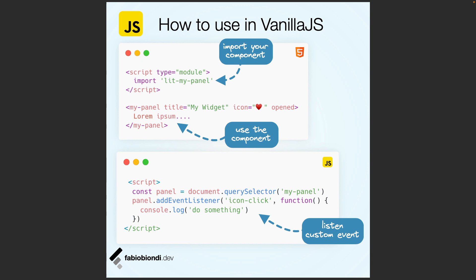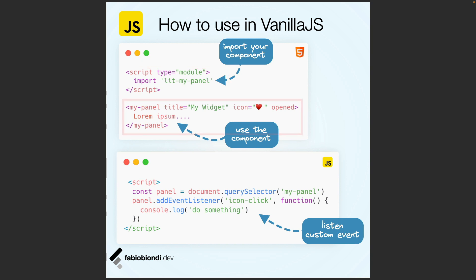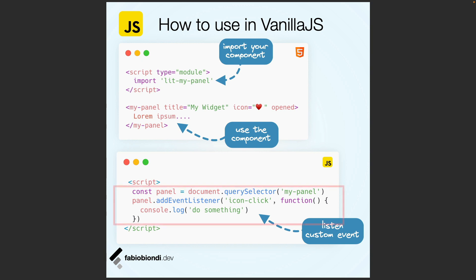To use our component in a vanilla JavaScript application, we just need to import it and use it in any HTML template. As you can see, we can just set all the attributes and the slot. To listen to a custom event, we just need to select the element and listen for the event as we usually do with native events.